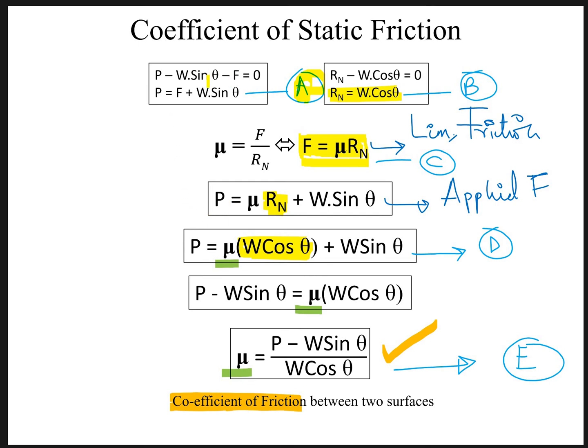After you plug this value in equation A you get P equals to μ Rn plus W into sine of theta. This is the equation you'll be getting after plugging the value of F in equation A. And right after that what you'll do, you'll plug in the value of Rn which is presented in equation B as W into cosine of theta. You'll place Rn over here and this will be the final equation you get.